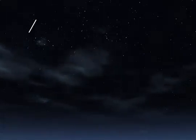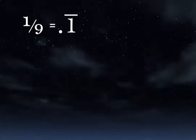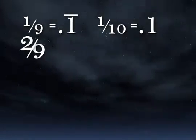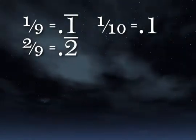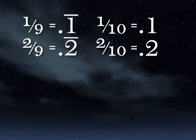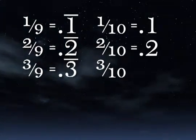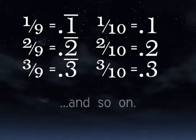9th and 10ths are very easy and very similar. 1 ninth is 0.1 repeating, and 1 tenth is 0.1. 2 ninths is 0.2 repeating, and 2 tenths is 0.2. 3 ninths is 0.3 repeating, and 3 tenths is 0.3. And so on.